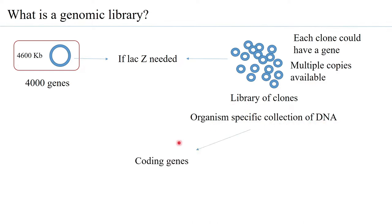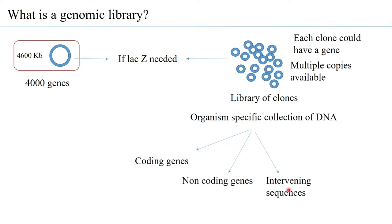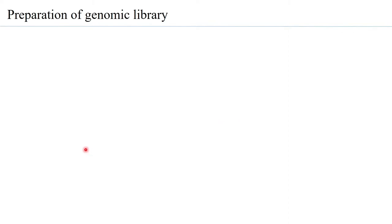A library of clones is basically an organism-specific collection of DNA. This library comprises coding genes — those genes that give rise to a protein — as well as non-coding genes such as rRNA, tRNA, mRNA, siRNA, and snRNA. It also includes intervening sequences, promoters, and terminators. All of these, when present in a single library of clones, is what is called a genomic library.